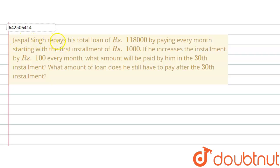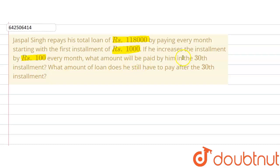The given question says that Jaspal Singh repays his total loan of Rs. 1,18,000 by paying every month, starting with the first installment of Rs. 1,000. If he increases the installment by Rs. 100 every month, what amount will be paid by him in the 30th installment?